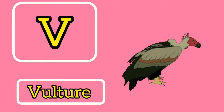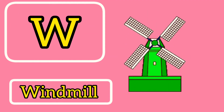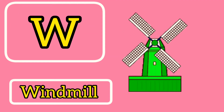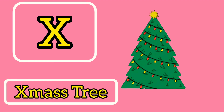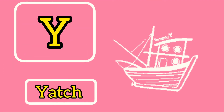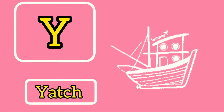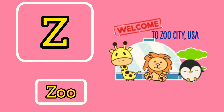V is for Vulture. W is for Windmill. X is for Xmas tree. Y is for Yacht. Z is for Zoo.